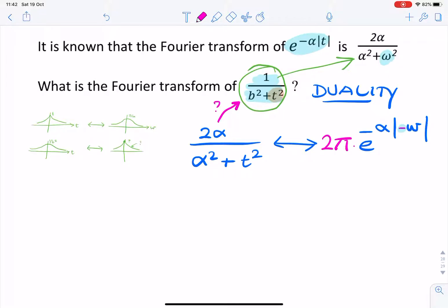So, does this look anything like that? Well, it does, except the numerator, we have a 2α. So, α is just a variable. I can change α to b. Then it would look slightly more similar. So, how about this, 2b over b² plus t².